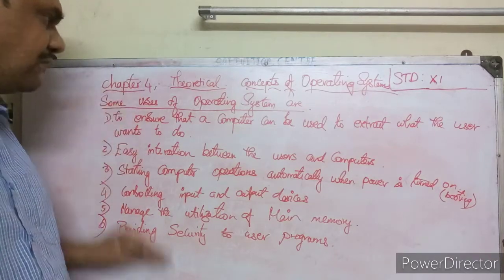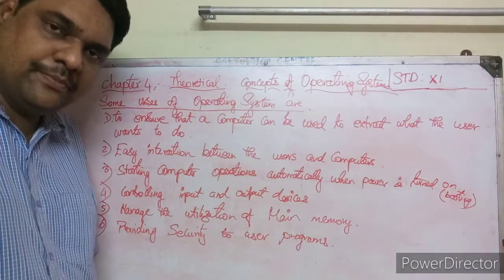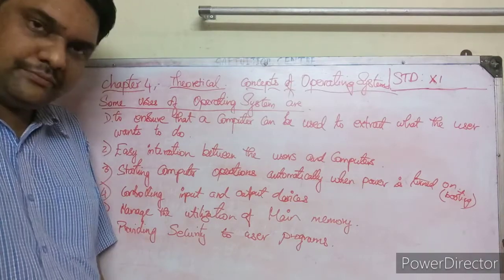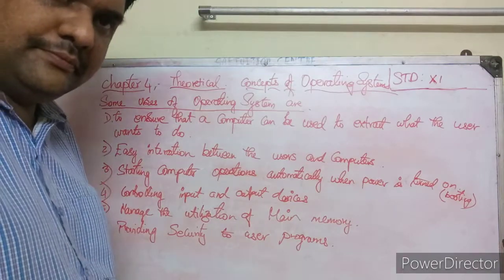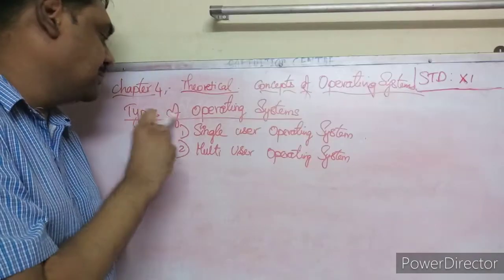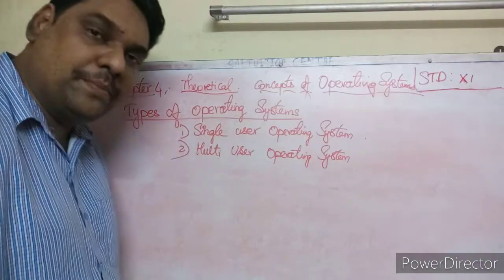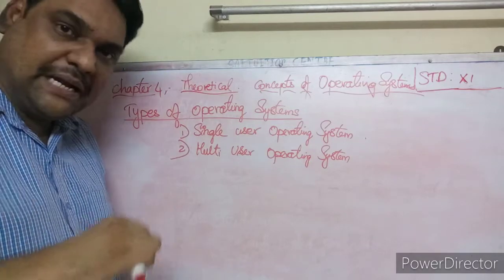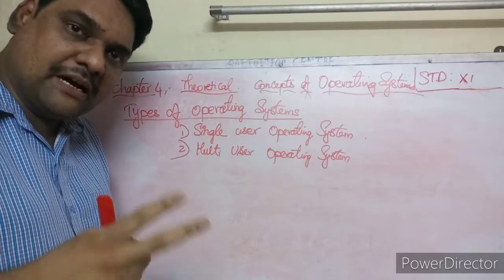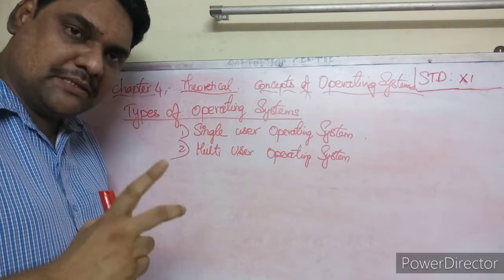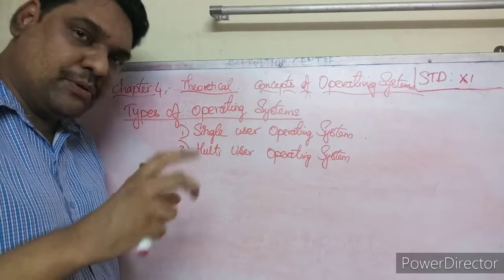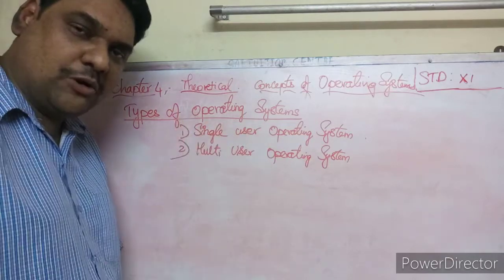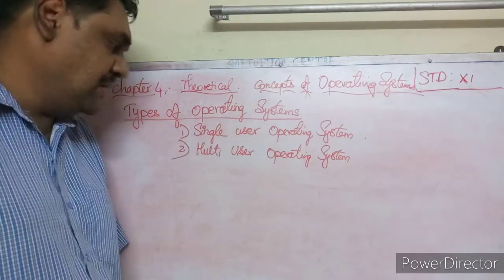These are the uses of the operating system. Now let us look at the types of operating system. Depending upon the number of users, there is single-user operating system and multi-user operating system.